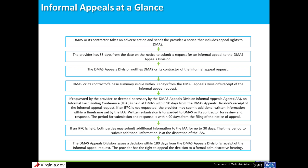Step 6: If an IFFC is held, both parties may submit additional information to the IAA for up to 30 days; the time period is at the discretion of the IAA but must not exceed 30 days. Step 7: The DMAS Appeals Division issues a written decision within 180 days from the Appeals Division's receipt of the informal appeal request. The provider has the right to appeal the decision to a formal administrative hearing.